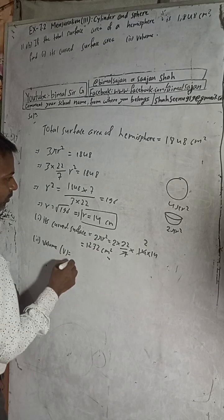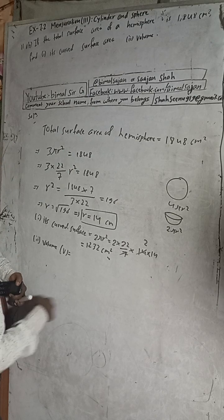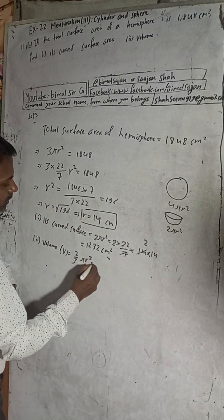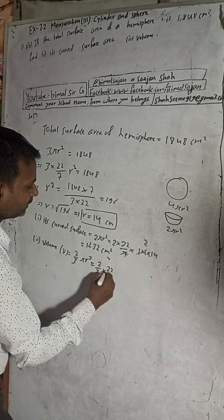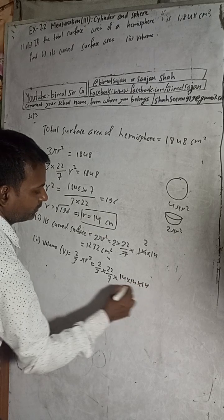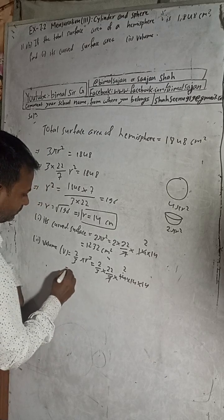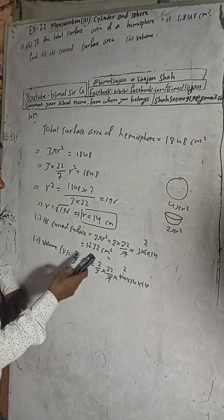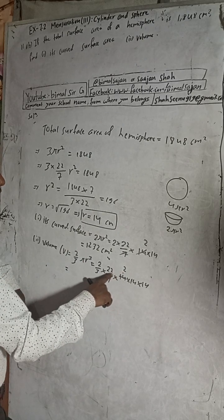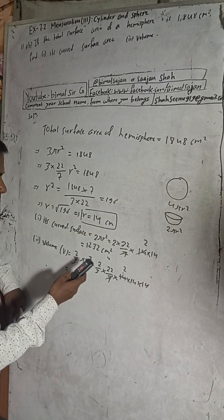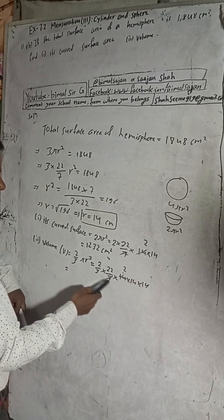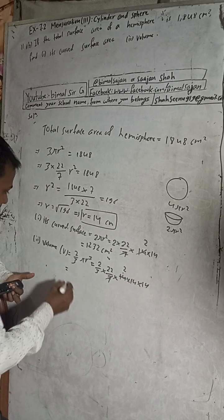Now volume. Volume formula for hemisphere - for sphere it is 4/3 πr³, so for hemisphere half that is 2/3 πr³. So 2/3 times 22/7, and r³ is 14 times 14 times 14. This is 7, 14... 196 times 2, 2 times... 22... 44, and then divide by 3.